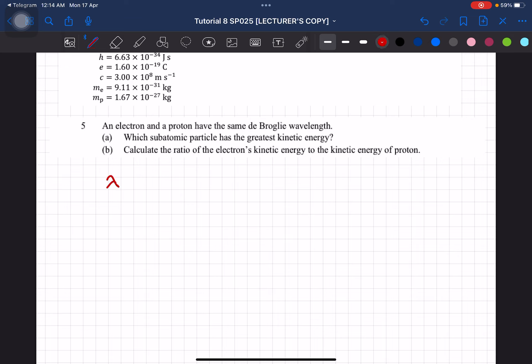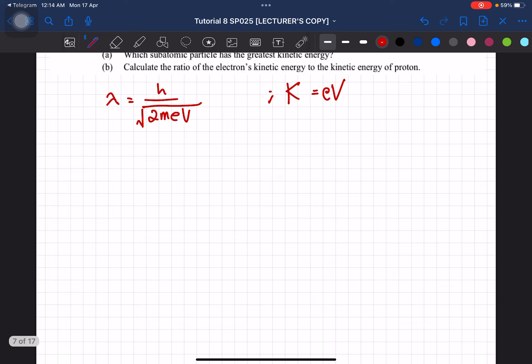Which is lambda equal to h over square root of 2meV. So now you may ask, where is the kinetic energy in this formula? So we know that kinetic energy is also equal to eV. So when we substitute lambda here, it becomes h over square root of 2mK, so we have an expression that is like this.